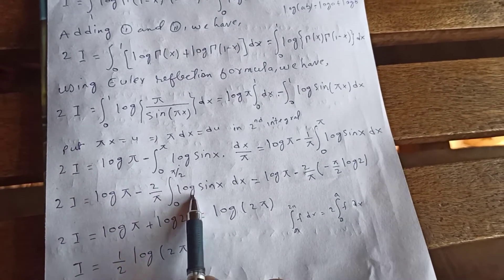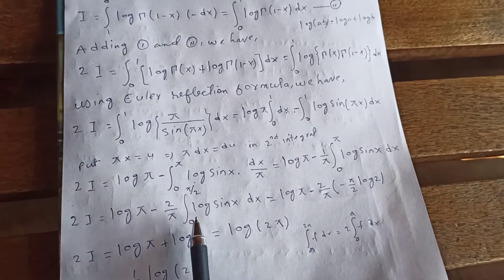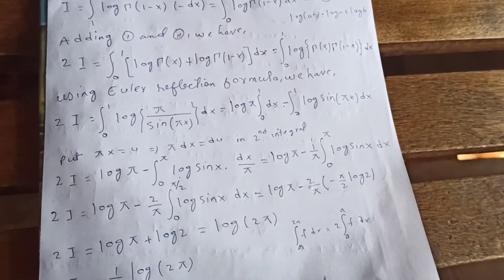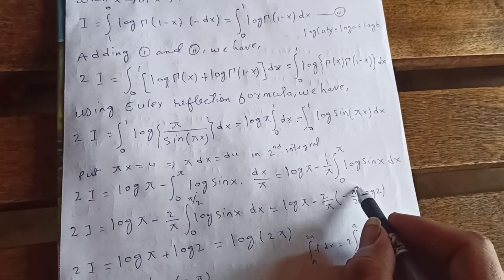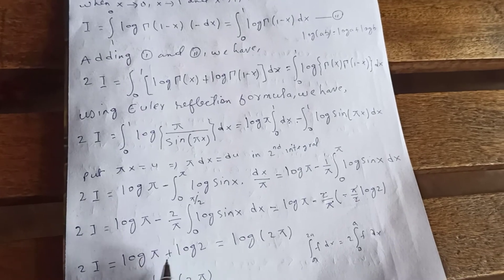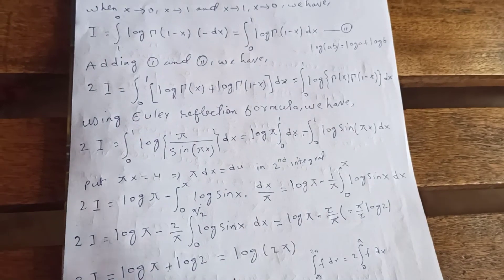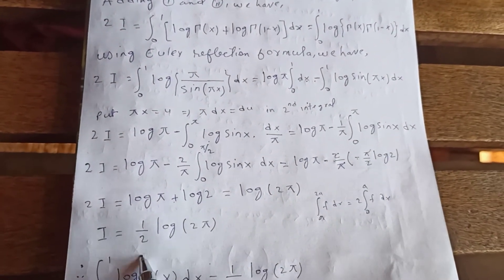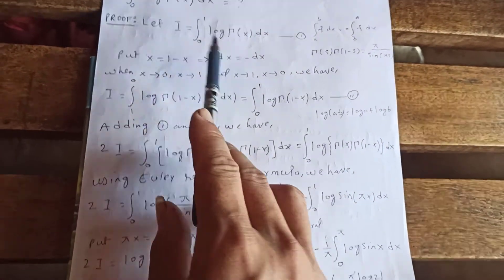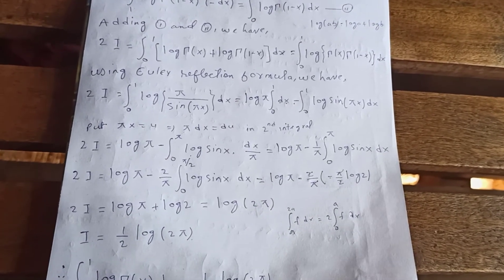Using this property, we get log(π) minus 2 over π. From a previous known result, the integral from 0 to π/2 of log(sin(x)) dx equals negative π/2 times log(2). So the π's and 2's cancel, and the negatives give a positive log(2). Using the log property log(a) plus log(b) equals log(ab), we get log(2π). Therefore I equals 1/2 log(2π), meaning the original integral from 0 to 1 of log(Γ(x)) dx equals 1/2 log(2π).